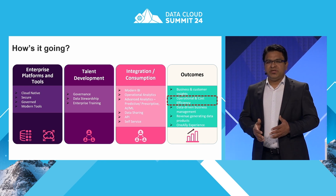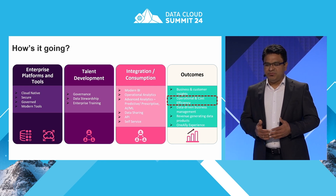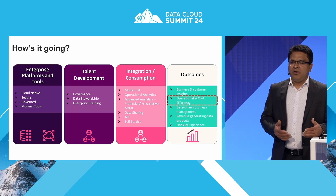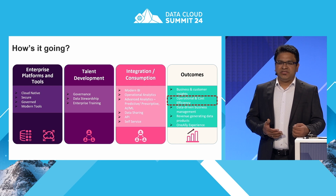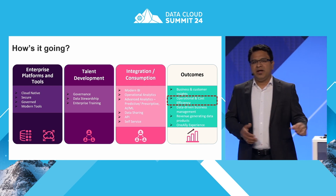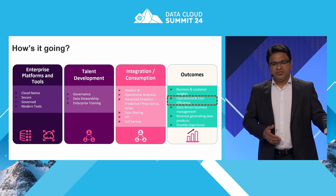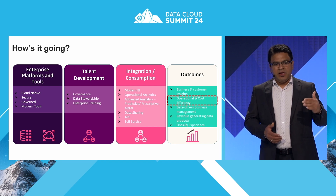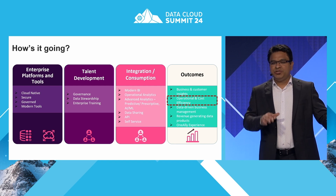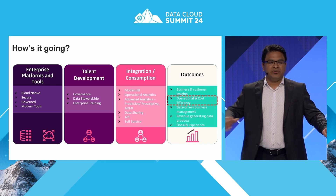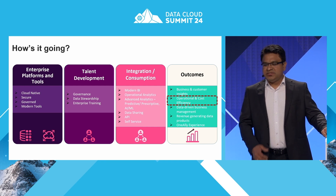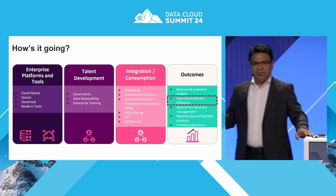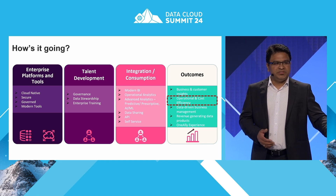The third pillar is integration and consumption — building a modern BI layer, excellent operational efficiency with data sharing, APIs, and sales models to support integration and data consumption. These three key pillars lead to the fourth pillar: providing business and customer insights, operational and cost efficiency, and data-driven models built using these pillars.